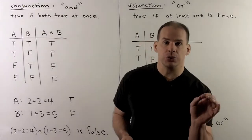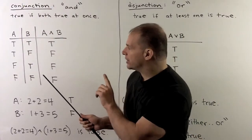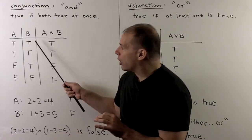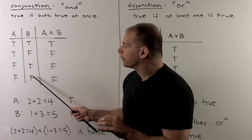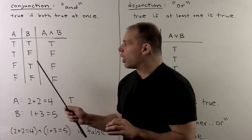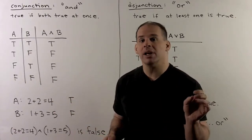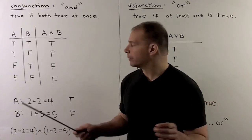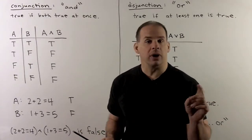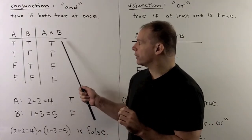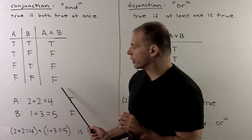So, for the truth table, now how do we set it up when we have more than one statement? Well, for the B, I'm going to alternate between true and false. As I move to the left, we'll alternate in twos, fours, eights, and so on until we have all possibilities. For A and B, this is true only when both A and B are true, so I'll get true in the first row and then false in all others.